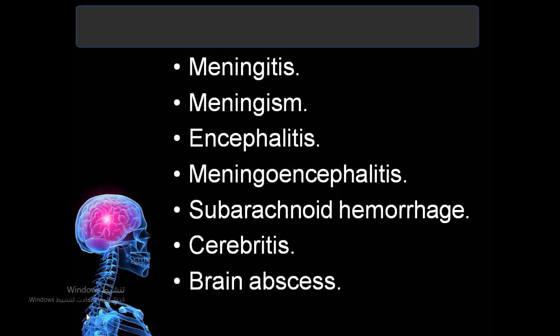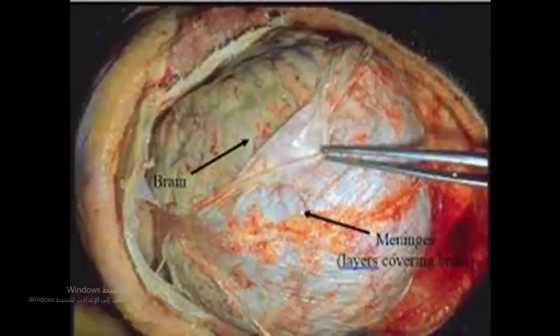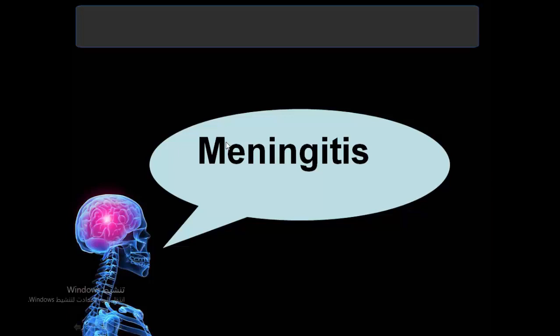The meninges are membranes that cover the brain directly to protect it. Meningitis is simply defined as inflammation in the layers surrounding the brain: the dura, pia, and arachnoid membranes. Inflammation in these membranes is called meningitis.